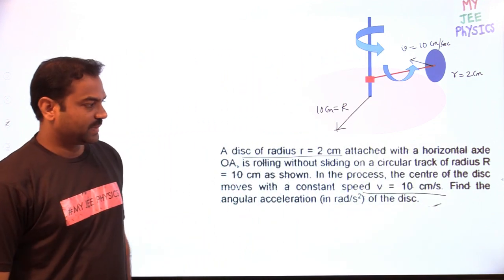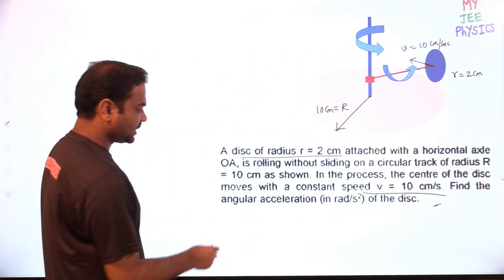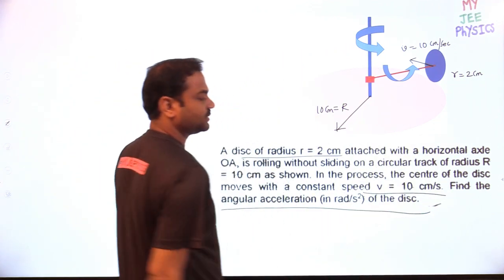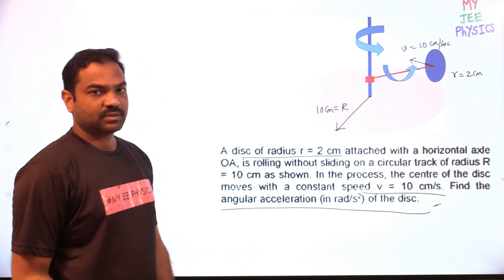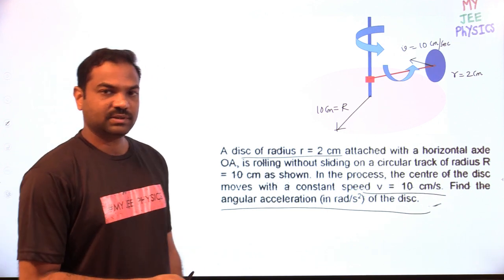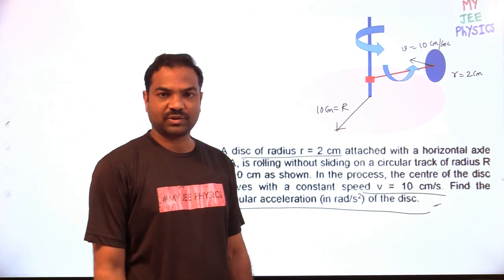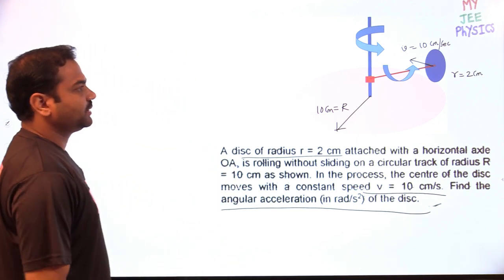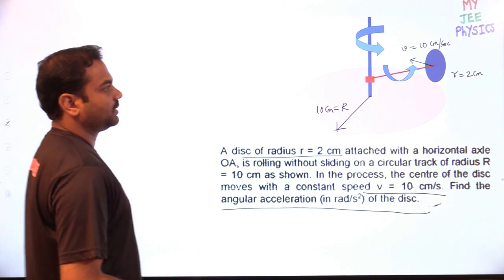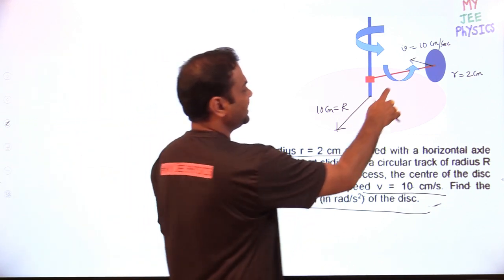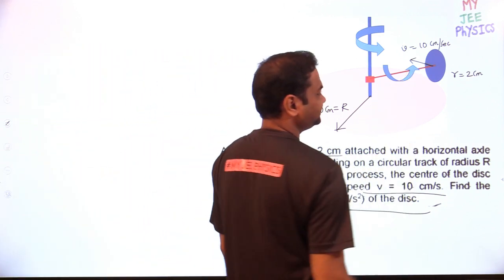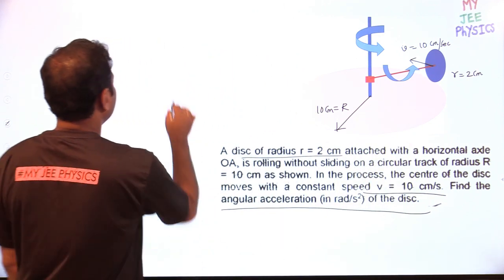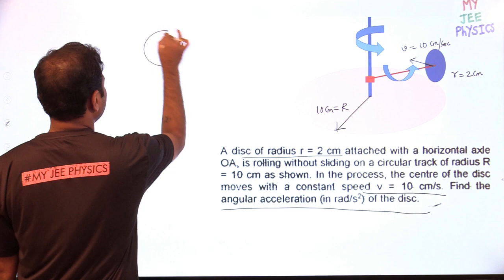Given this information, they are asking for the angular acceleration of the disc. Try it once and come back for the solution. Now we can identify the omega value of the disc easily, because this disc is rolling without slipping.